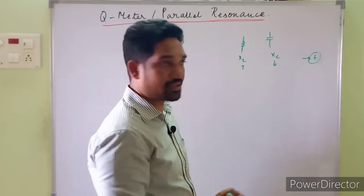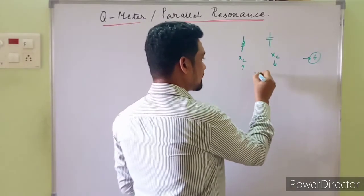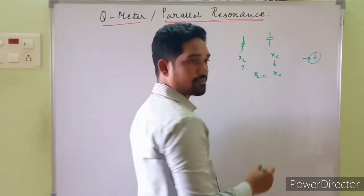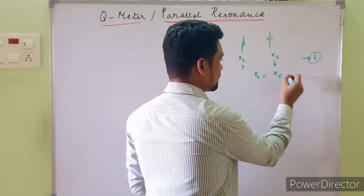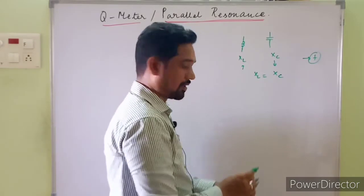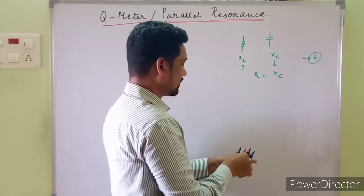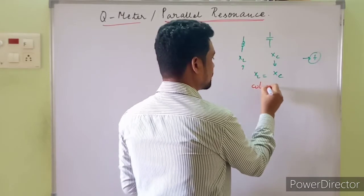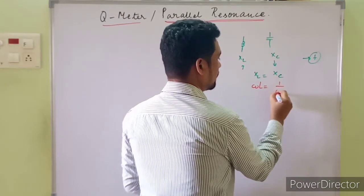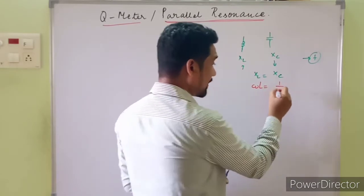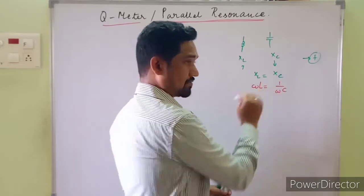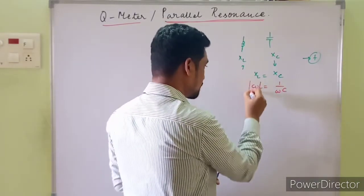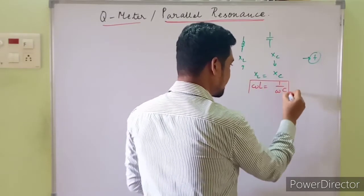What happens at resonance? The inductive reactance XL will be equal to the capacitive reactance XC. So how we represent this: it's ωL which is equal to 1/(ωC). Please make a note — this equation comes into existence at resonance.